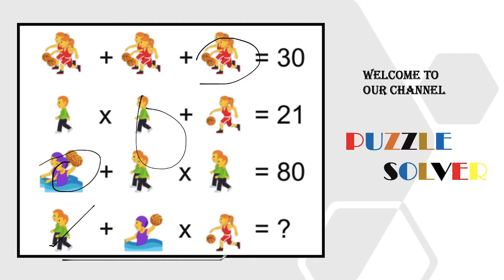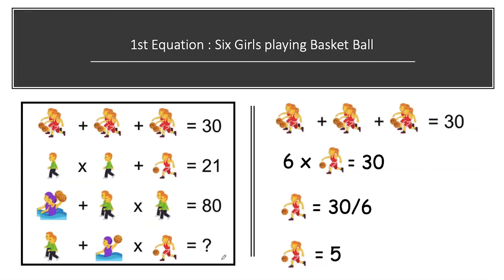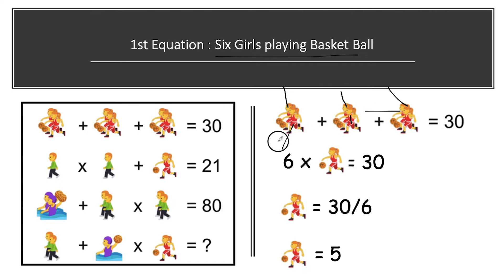Three, two, one, stop! Hope you all enjoyed solving the puzzle. Let's begin to see the complete solution. In the first equation, we have six girls playing basketball — one, two, three, four, five, and six — and their sum is equal to 30.